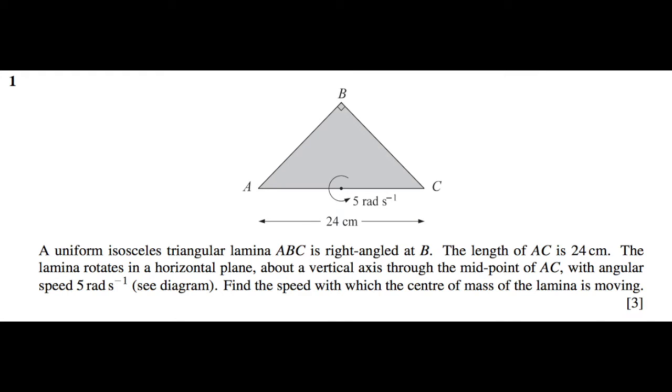October-November 2002, Question number 1. A uniform isosceles triangular lamina ABC is right-angled at B. The length of AC is 24 centimeters.